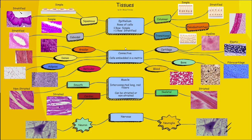In the middle here are the main categories of tissues. We have epithelium, connective, muscle, and nervous tissue. Those are the main categories. And then off to the sides, we have all the subcategories, like the different types of epithelium.